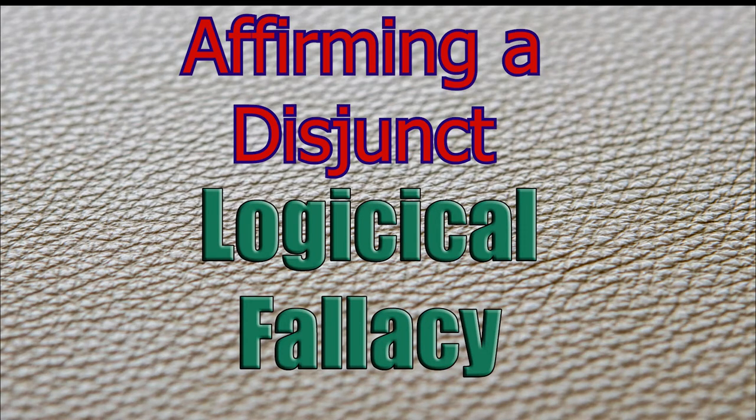Affirming a disjunct. This is a fallacy that takes two things that are not mutually exclusive and says that if one is true, then the other can't be true, when in fact both could be true.